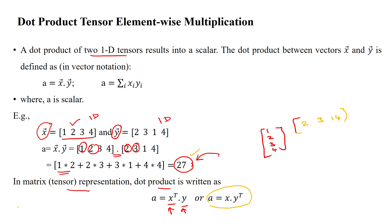A equals X transpose dot Y. This is X transpose and this is dot Y. If you want to perform Y transpose, it becomes the row vector 2, 3, 1, 4, and you can then perform the dot product with X. That is the tensor element-wise multiplication for the one-dimensional tensor.